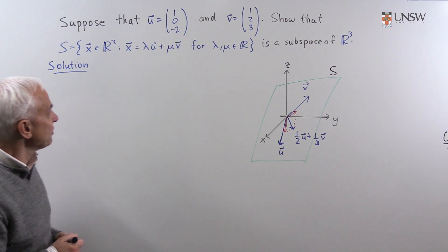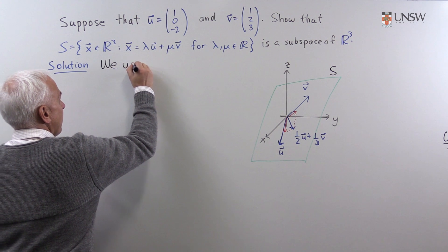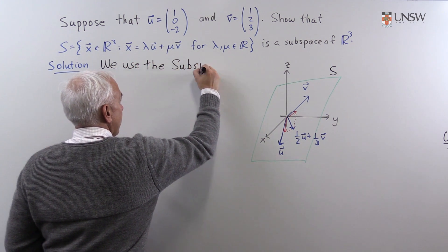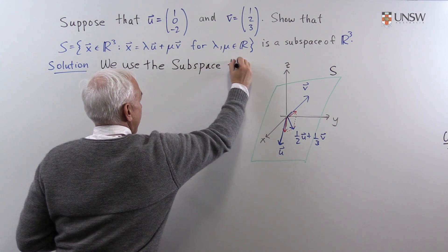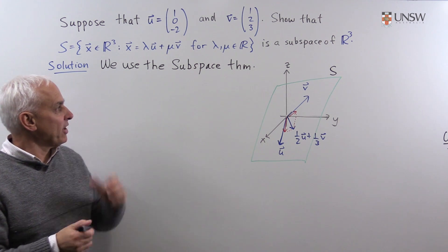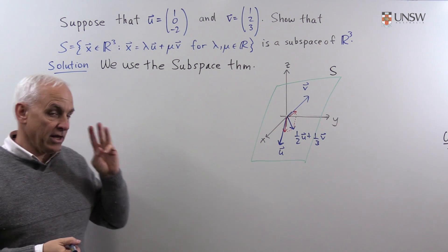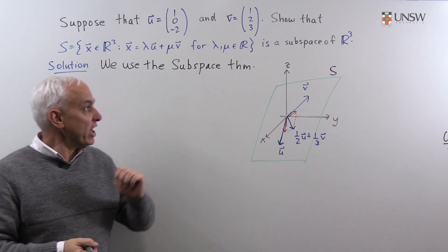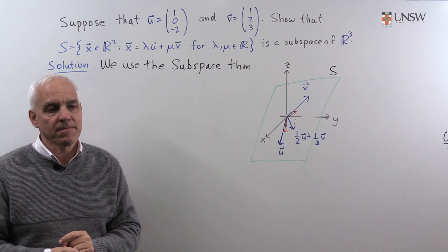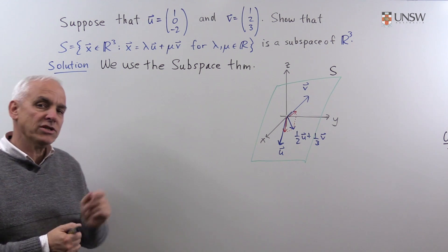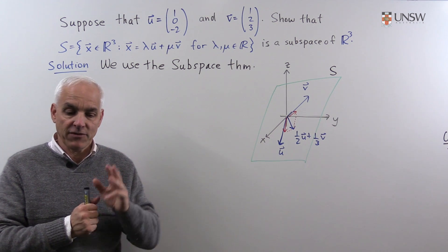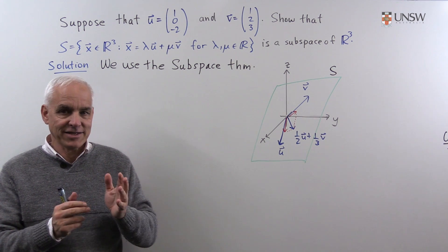So to solve this problem, we use the subspace theorem. The subspace theorem tells us how to prove that something is a subspace. So there are basically three things that we have to check. We have to check that the subset is, first of all, not empty, that there's at least something in it. We have to show that it's closed under addition, and that it's closed under scalar multiplication. If we can do those three things, then it's a subspace.